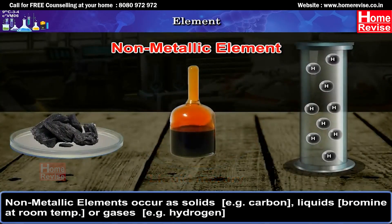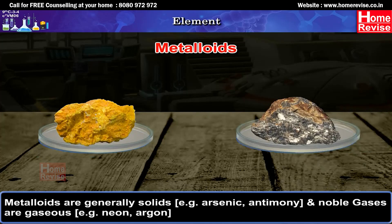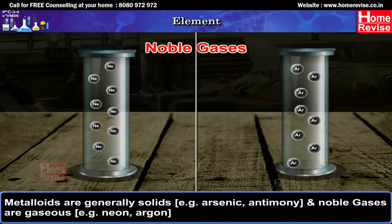Non-metallic elements occur as solids (e.g., carbon), liquids (e.g., bromine at room temperature), or gases (e.g., hydrogen). Metalloids are generally solids, e.g., arsenic, antimony. Noble gases are gaseous, e.g., neon, argon.